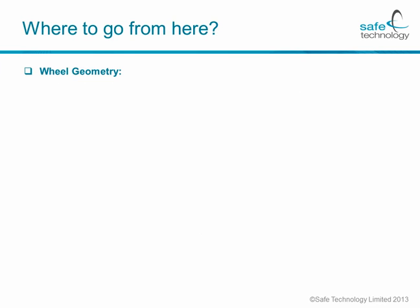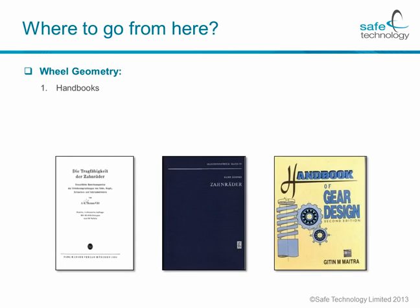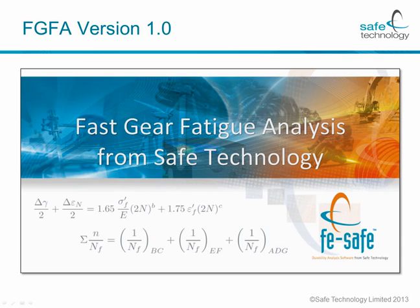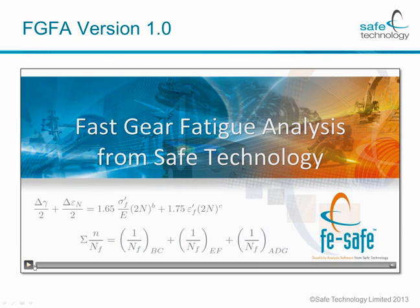So where do we go from here? You need a wheel geometry in order to be able to analyse anything. You can get to a wheel geometry either by using handbooks or by drawing everything by hand in a CAD package like CATIA or SOLIDWORKS. The next hurdle comes when you're trying to translate this from CAD to FEA, and once you've done that, the final hurdle is how to pass the information from the FEA on to the fatigue life prediction. This is where the thought of automation comes in. On the back of that idea, I would now like to demonstrate Fast Gear Fatigue Analysis version 1 in live action.